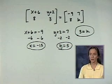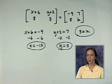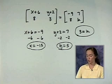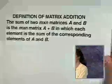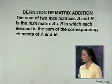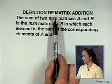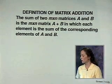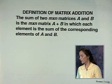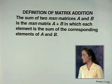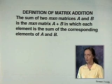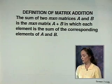The next operation — along with some terminology — is addition. Here's the definition of matrix addition. The sum of two M by N matrices A and B is the M by N matrix A plus B, in which each element is the sum of the corresponding elements of A and B. That actually sounds more confusing than it is — here's an example.